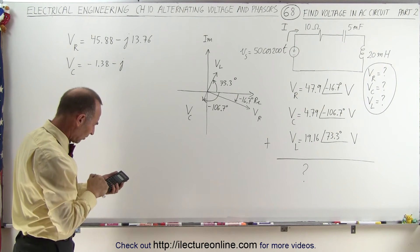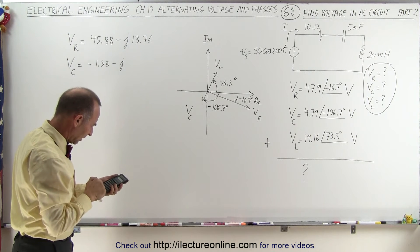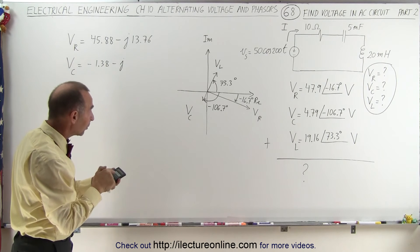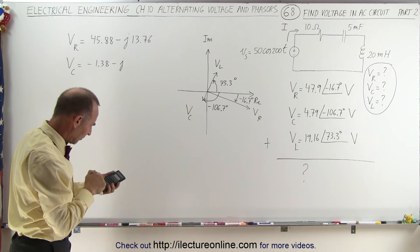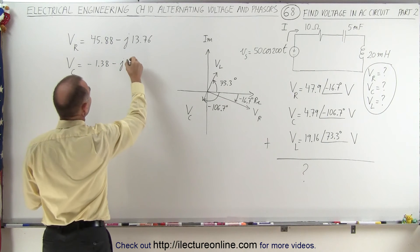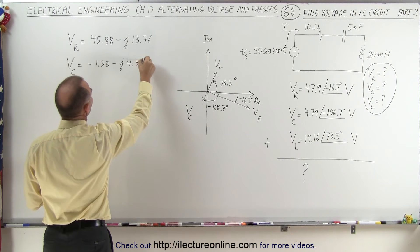Minus j, take the sine of 106.7 and multiply that times 4.79, and that's negative 4.59.